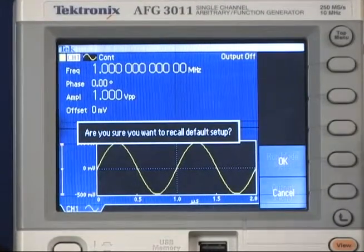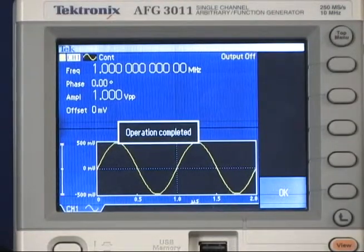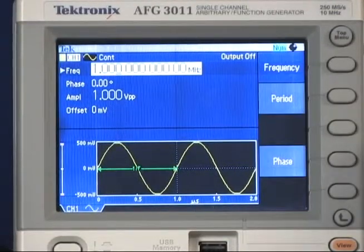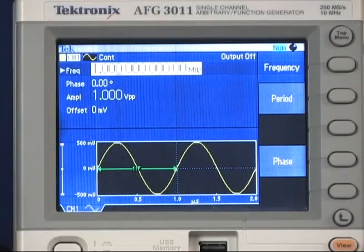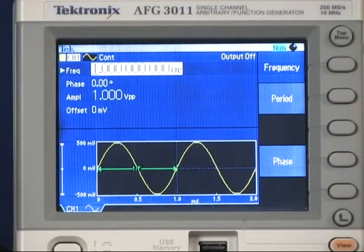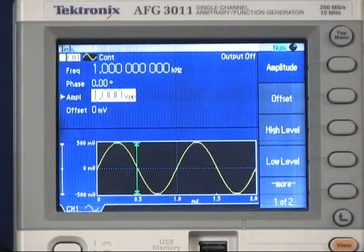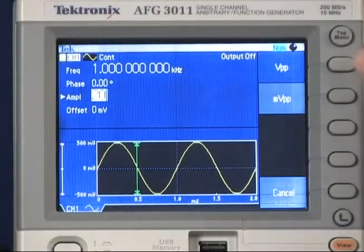From the default setup, which we've set, I'm going to set the frequency to one kilohertz, which is audio mid-band, so I'll hit the one and the kilohertz. And then I'm going to set the amplitude to my maximum amplitude, which is 20 volts peak to peak.